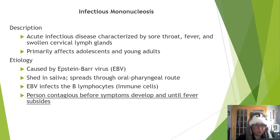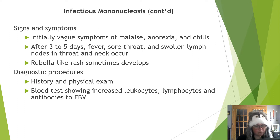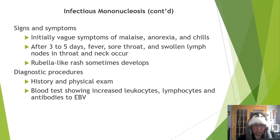EBV infects the B lymphocytes, a type of white blood cell that is part of the immune system. This disease spreads very quickly, partly since a person can be contagious before symptoms set in. You're contagious until the fever subsides. Symptoms start off rather vague — malaise, anorexia, and chills. After about three to five days, a fever, sore throat, and lymph nodes in the neck swell.